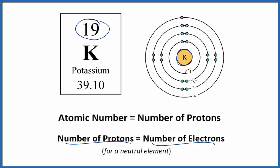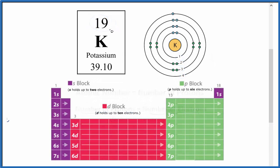And we have 1, 2, 3, 4 energy levels for potassium. So let's take a look at the periodic table and see how we can figure out how many electrons are in each energy level. So remember, we have 19 total electrons.